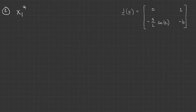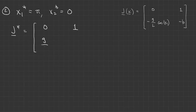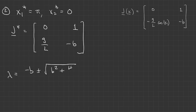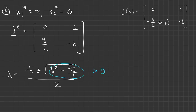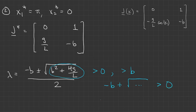At the other equilibrium point, X1 equals pi. Plugging that into the Jacobian matrix just flips the sign of one of the entries. The eigenvalues look very similar but behave very differently. Now the discriminant is always positive, so the eigenvalues are always real, and the square root of the discriminant is always bigger than b. Adding that to negative b gives something real and positive, so this point is always an unstable saddle point — the other eigenvalue will be negative.